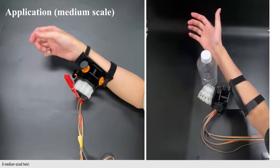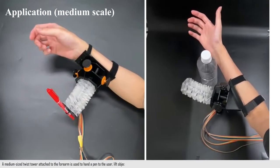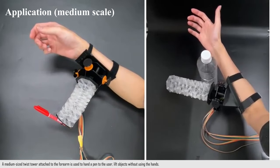A medium-sized twisted tower attached to the forearm is used to hand a pen to the user and lift objects without using the hands.